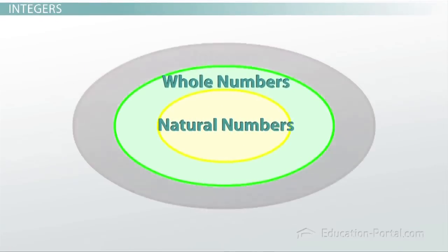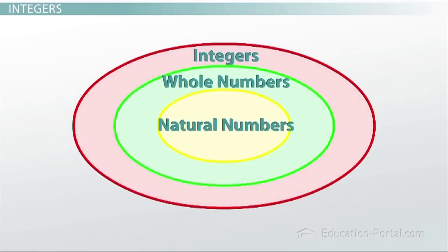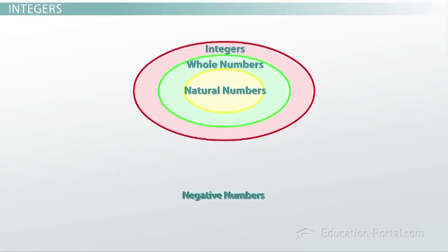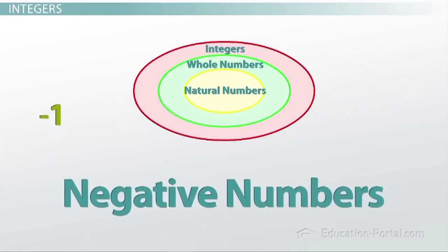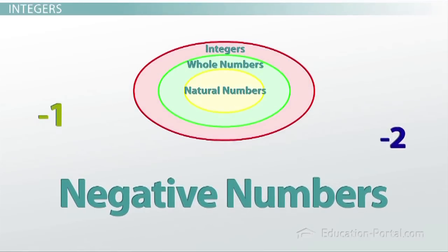Again, not all of the integers are whole numbers and natural numbers, but all of the whole numbers and natural numbers are integers. But the integers now also add in the negatives: negative one, negative two, negative three, and on and on and on in the negative direction as well.